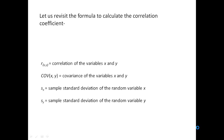In this video, let us revisit the formula to calculate the correlation coefficient. Rxy is equal to covariance of xy upon standard deviation of x into standard deviation of y. Here Rxy is the correlation of the variables x and y. Covxy is the covariance of the variables x and y. Sx is the sample standard deviation of the random variable x, and Sy is the sample standard deviation of the random variable y.